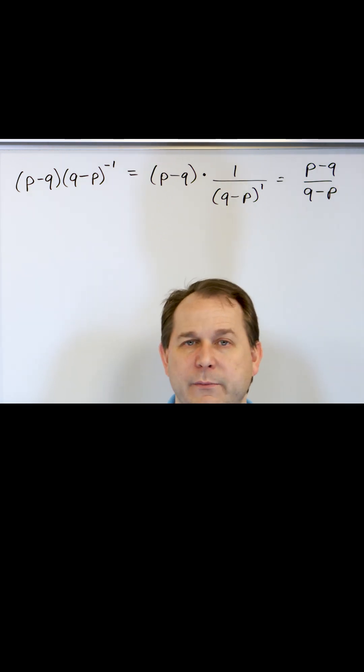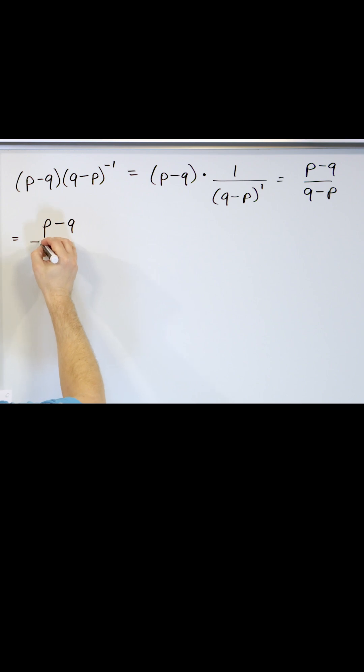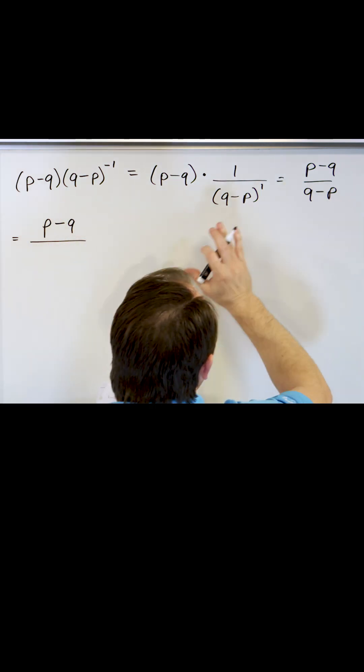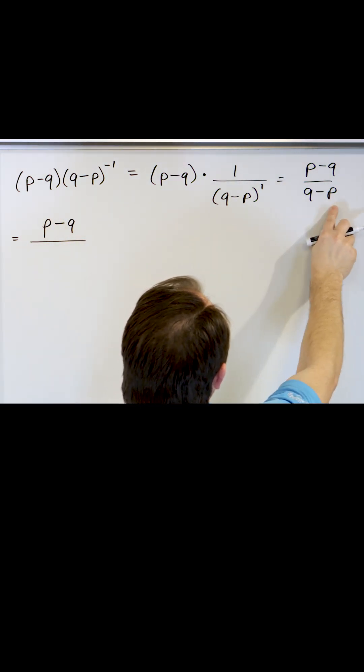So what we can do is play around with this a little more to figure out a way to make it cancel. On the top, let's leave P minus Q intact. On the bottom, I'm going to get through it and then we'll talk about it. I want to factor something out of this.